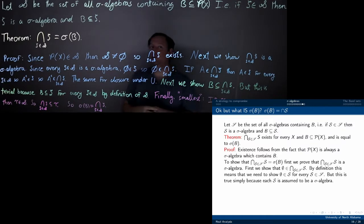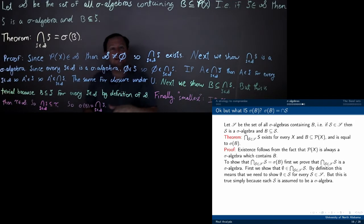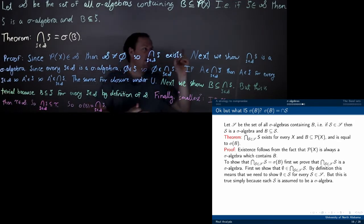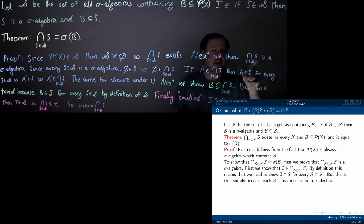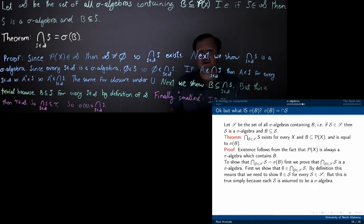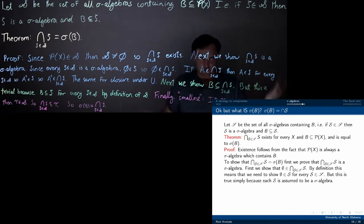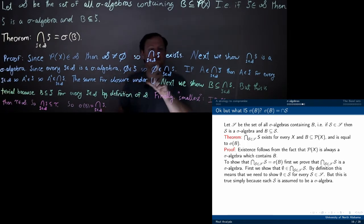Next we'll show that this intersection is a sigma algebra. We have to show that the empty set is in that intersection. To show that anything is in the intersection, you have to show that it is contained in every single one of these calligraphic S's — that's what it is to be in the intersection. Every single one of these is, by assumption, a sigma algebra, and sigma algebras by definition contain the empty set. So every single one contains the empty set, therefore the intersection contains the empty set.